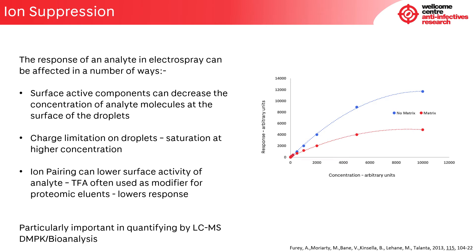As seen in the previous slides, the electrospray is sensitive to surface activity, and there are a number of ways in which the response of an analyte can be affected during the ionization process. The presence of surface active components can reduce the concentration of an analyte at the surface of a droplet and therefore its response. This can be seen most clearly by comparing calibration curves of an analyte prepared in solvent, shown in blue, against that prepared in a matrix such as plasma or serum, shown in red. There are a number of surface active species present in plasma or serum and they reduce the response of the analyte.